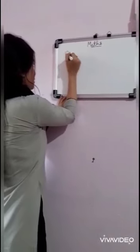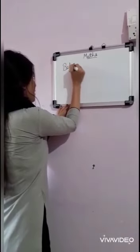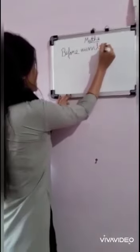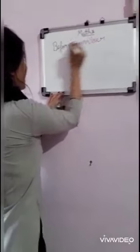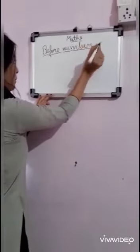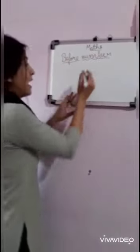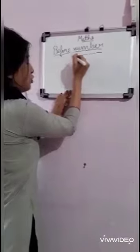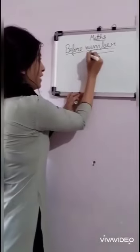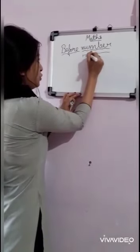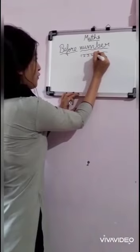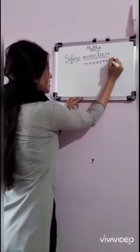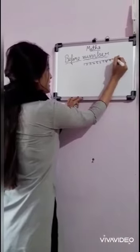Here I will write before number — you can see easily. And I will make a line here so you can understand easily. 1, 2, 3, 4, 5, 6, 7, 8, 9 and 10.